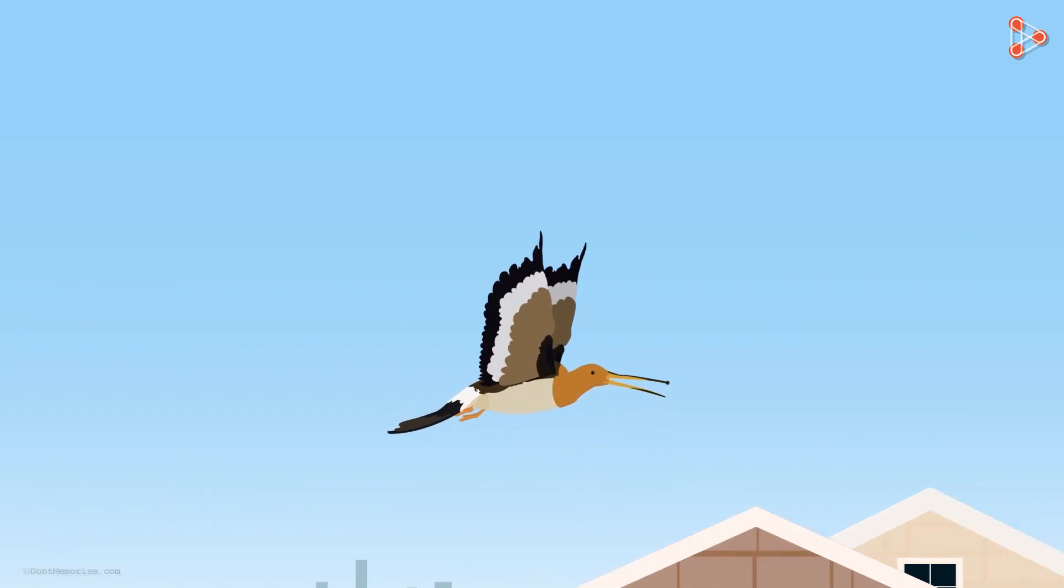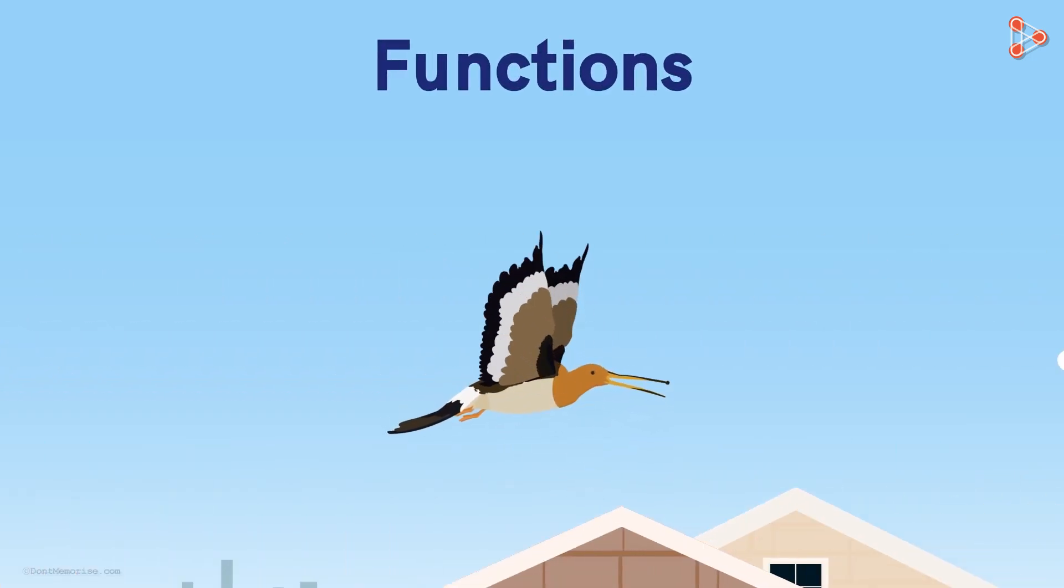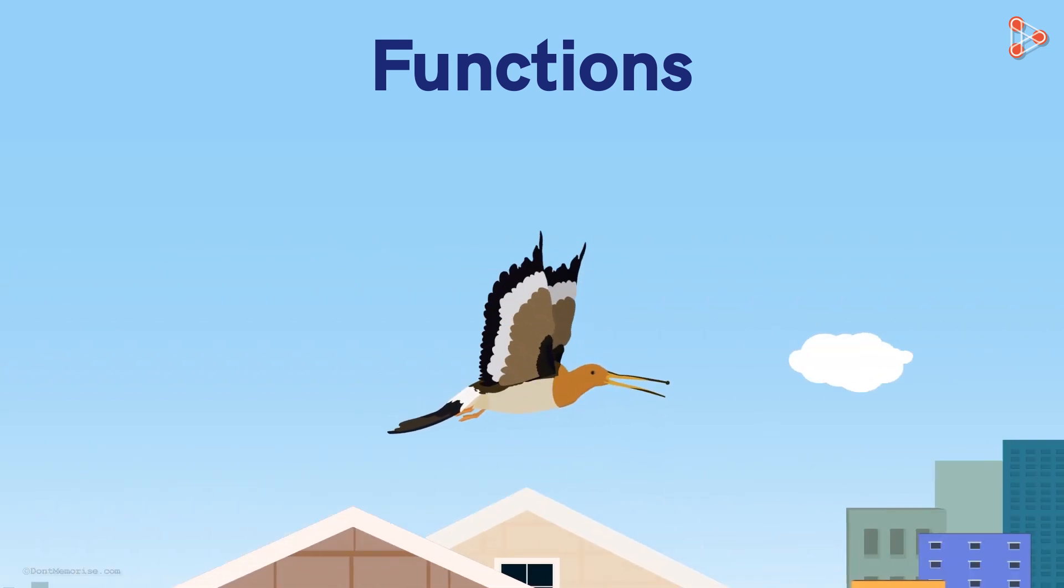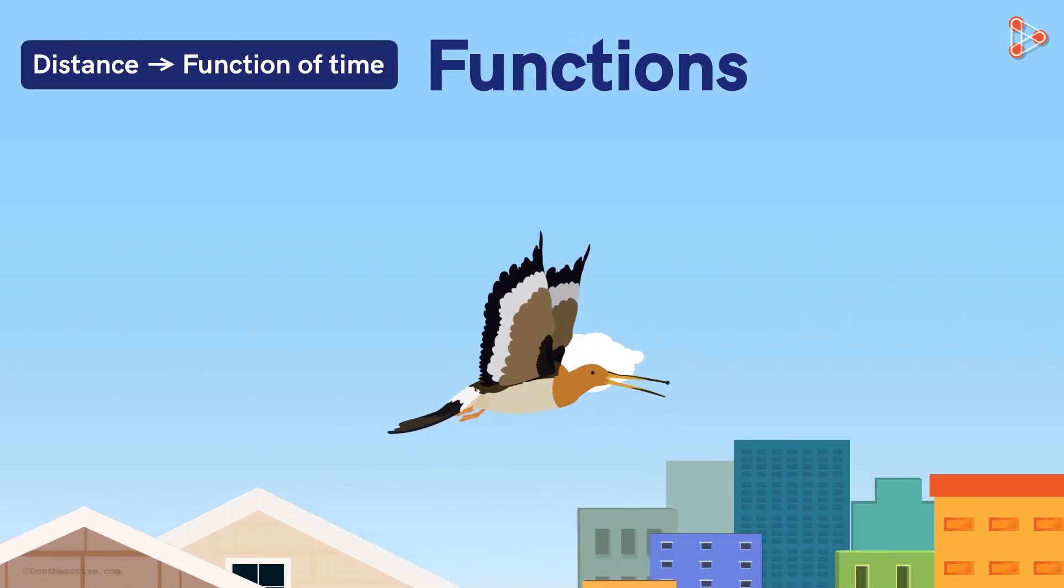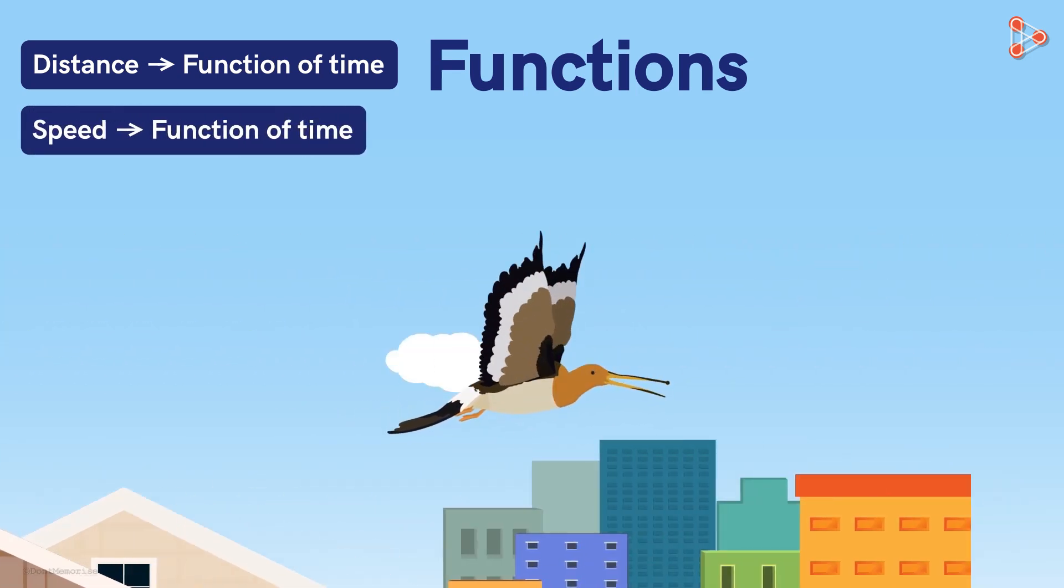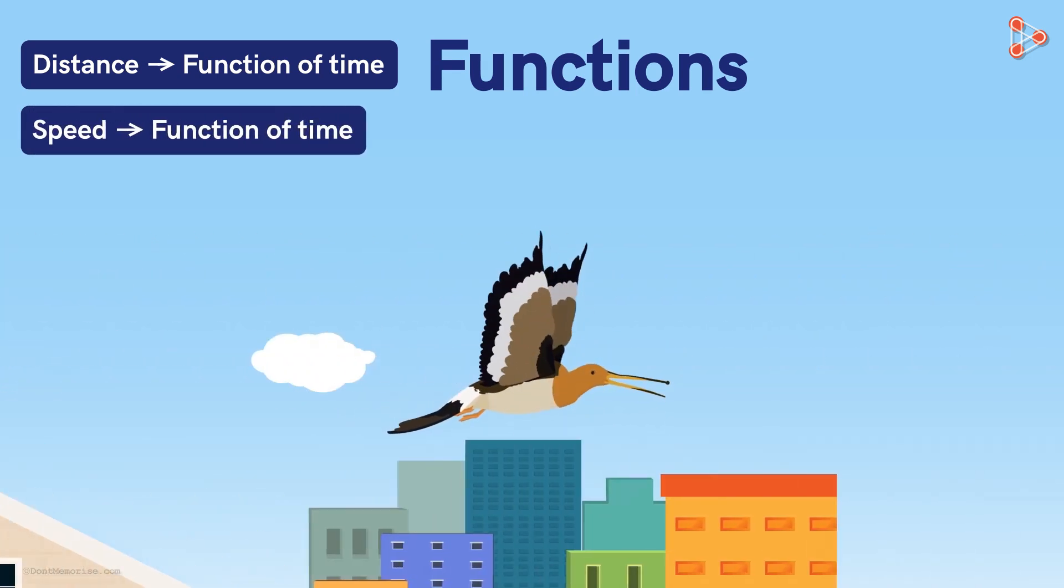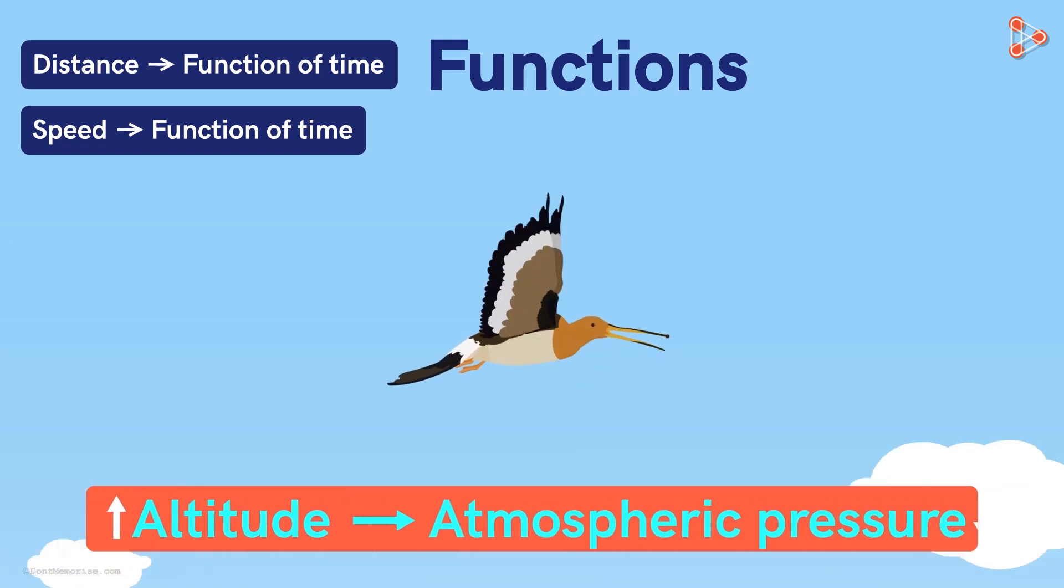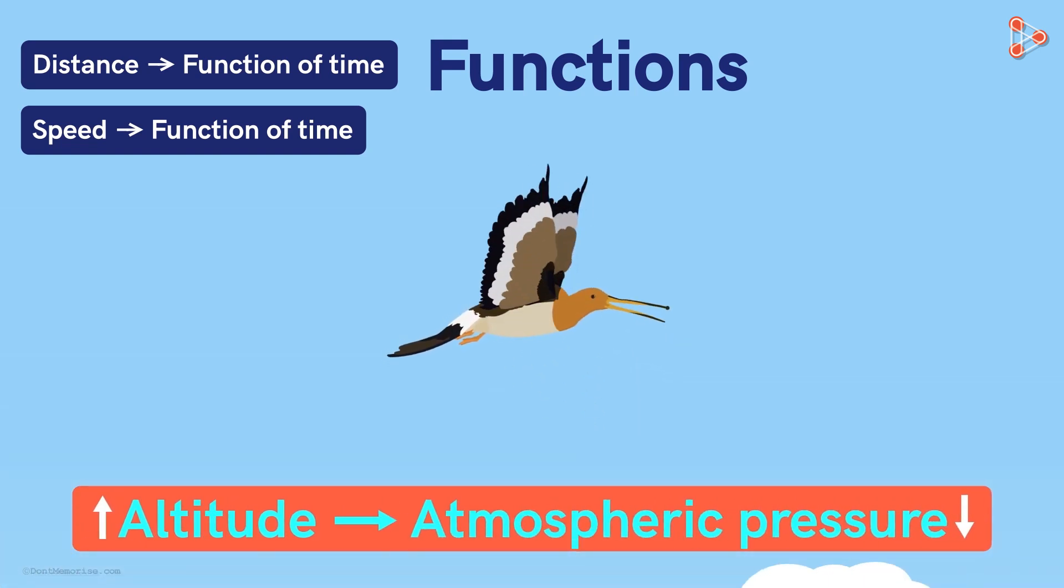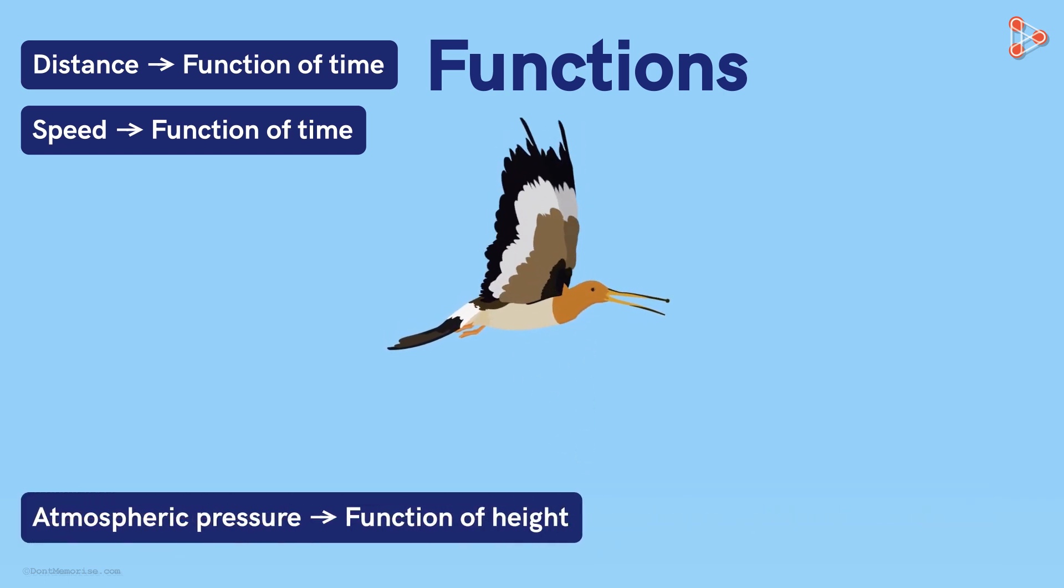Look at this bird flying. Can you think of some functions related to its motion? We saw two such functions earlier. The distance travelled as a function of time and its speed too as a function of time. But we also know that as the altitude rises, the atmospheric pressure decreases. So, the atmospheric pressure felt by the bird is the function of its height above the ground.